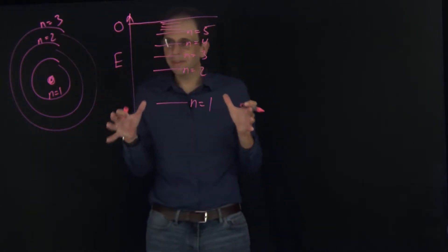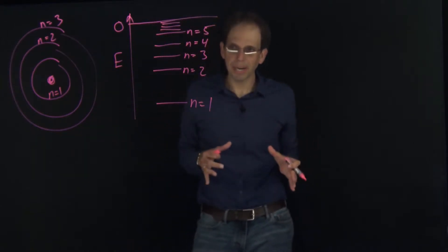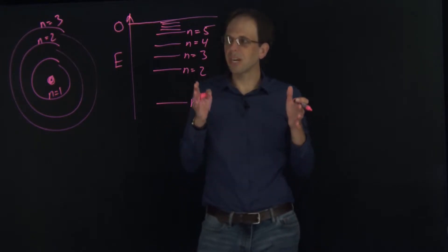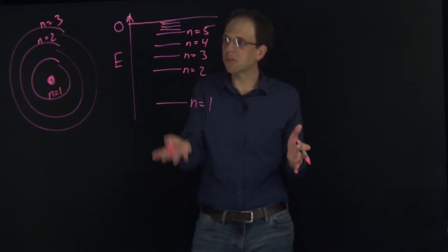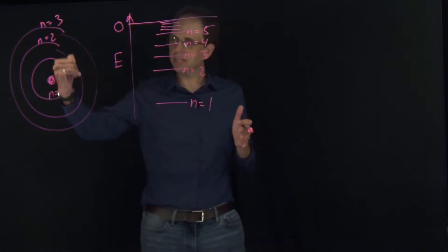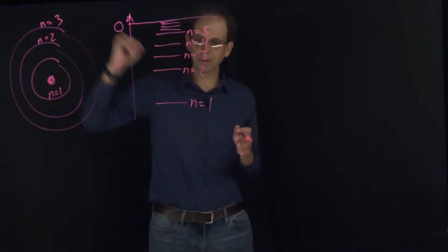When we see, for example, atomic emission spectra, or if we shine light at a hydrogen atom and it absorbs the light, that corresponds to transitions between these different orbits.